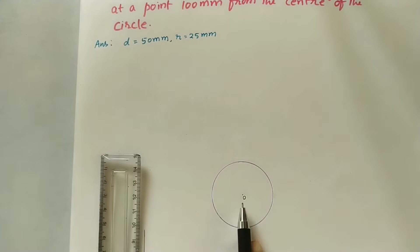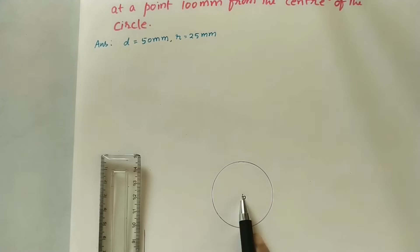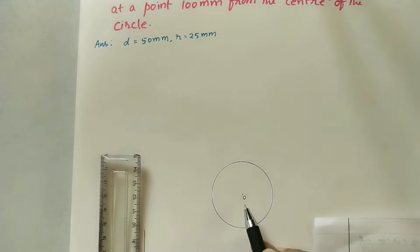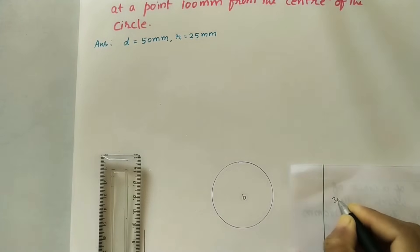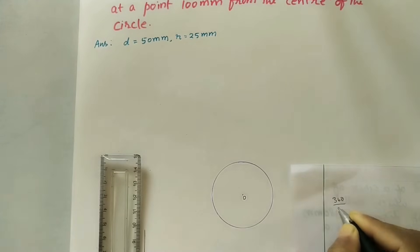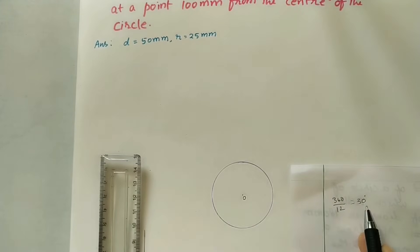After doing the circle, divide this circle into 12 equal divisions. As we know, the center angle is 360 degrees. We have to divide this 360 degrees into 12 equal divisions. It is 360 by 12, which is 30 degrees. Each angle is 30 degrees.